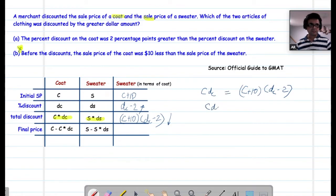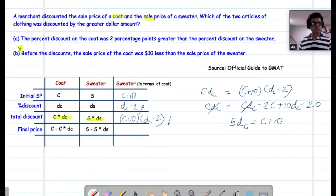You get CDC equal to CDC minus 2C plus 10 DC minus 20. And as you calculate everything, you will get 5 DC equals C plus 10. What it is telling us is these two values will be equal when there is this relationship between DC and C. Now, we don't know what DC and C is.